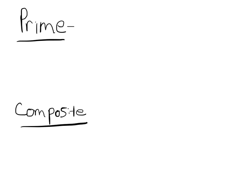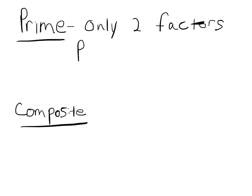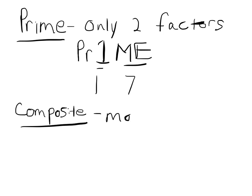We need to review what prime means. Think about what prime means and think about prime factors. Prime means that there are only two factors. The easiest way to remember this: write the word prime, but instead of the 'i', write a 1 really big, and then 'me'. So a prime number just has factors of 1 and me — the number itself. For example, the only factors of 7 are 1 and 7.